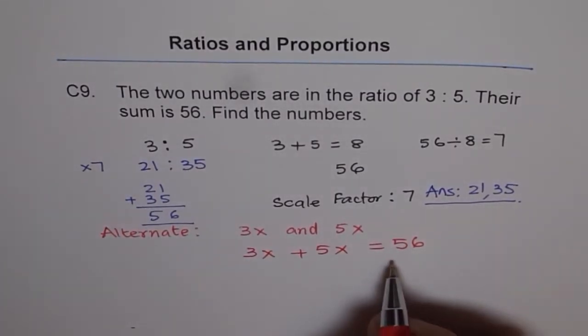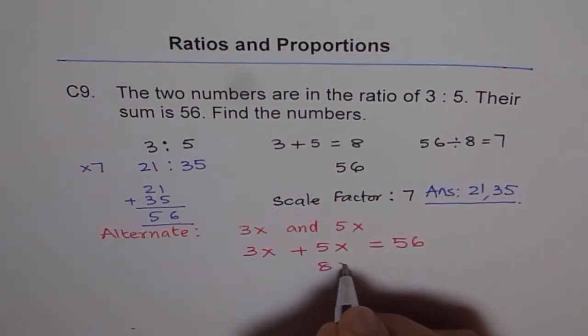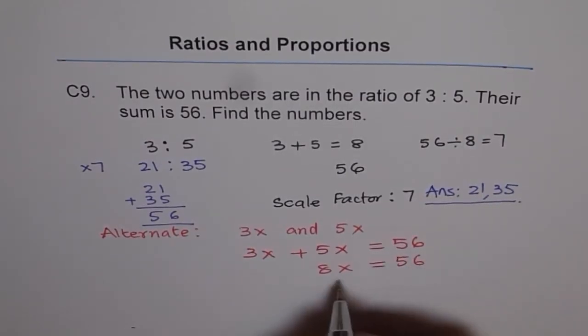So we get an equation and this equation can be solved by combining like terms. 3x plus 5x is 8x. So 8x equals to 56. What is x equals to? We can divide by 8.